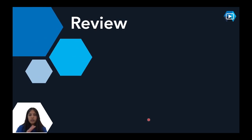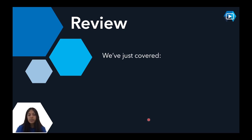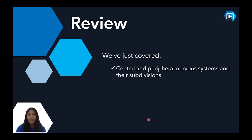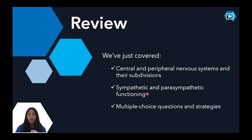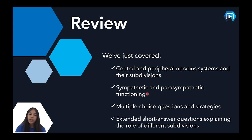Hopefully that's been a good quick run-through of the types of practice questions you might expect in your SACs or exams. As a refresher: we covered the CNS and PNS, the somatic and autonomic as divisions of the peripheral nervous system, and the parasympathetic and sympathetic as divisions of the autonomic. Remember to bring this information into your study on stress — that table becomes really important. We looked at multiple choice and extended short answer questions, both four marks. Thanks so much for watching — hopefully it was helpful.